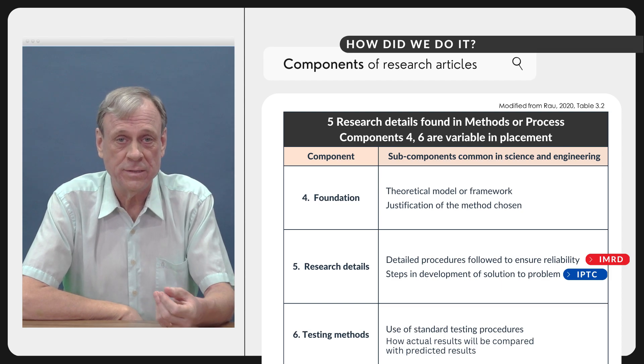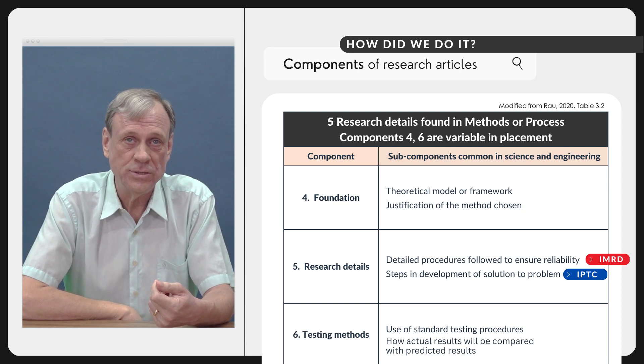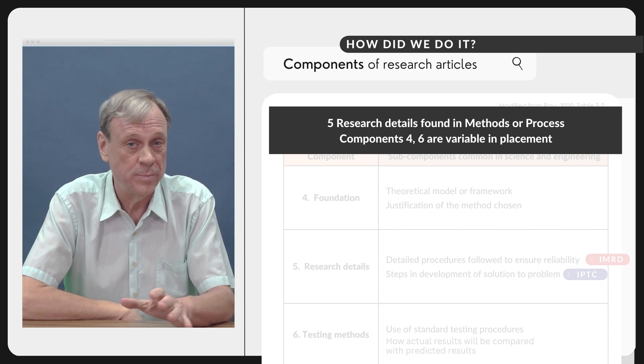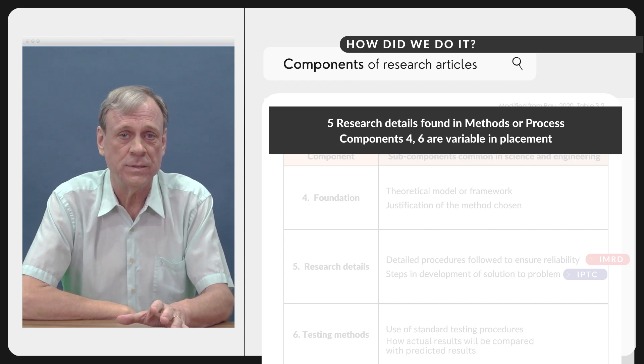And then you go on into the methods or the process division and this is where you find how did we do it. And there are three main things here as well: the foundation, the research details, and the testing methods. Now these are not always found in the methods division, again it depends, there's a difference between science and engineering.